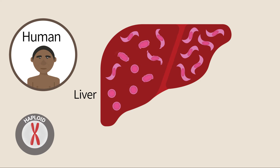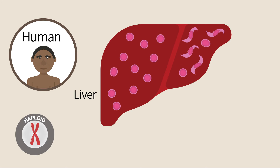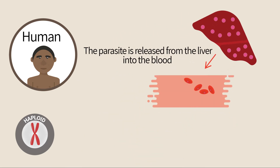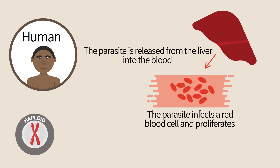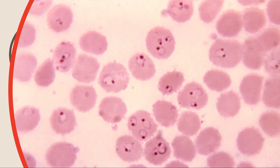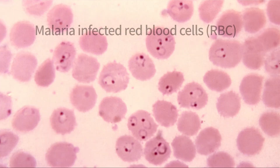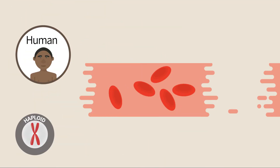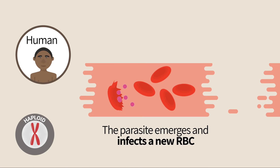The parasites differentiate, re-enter the bloodstream, and invade red blood cells. In these cells, the parasite undergoes several further divisions within the next 48 to 72 hours. Subsequently, the red blood cells burst and the parasites invade new ones.